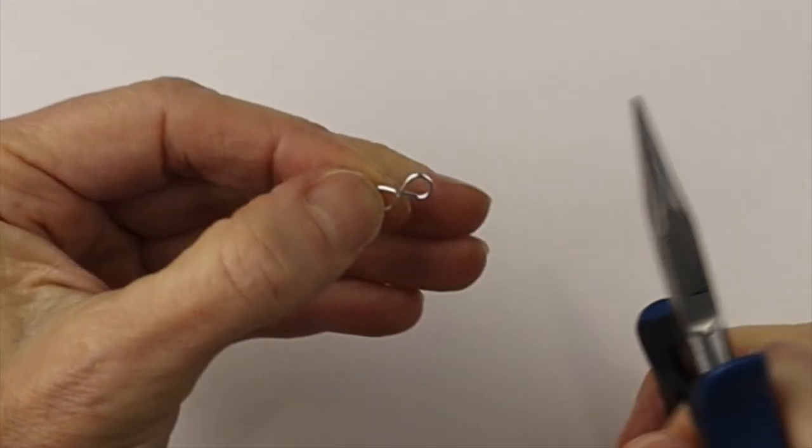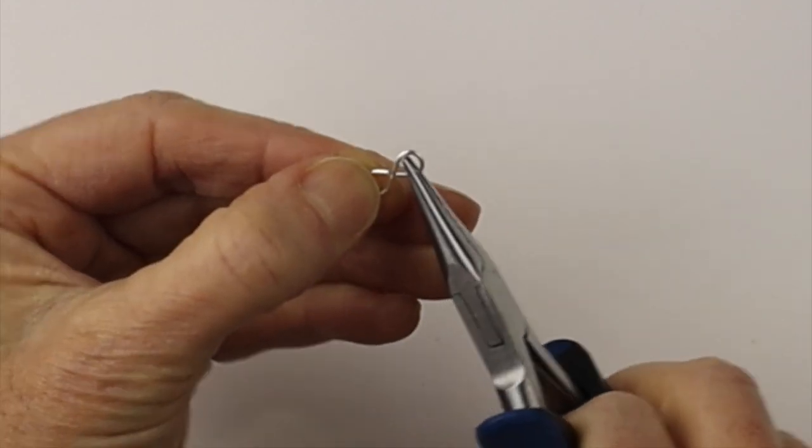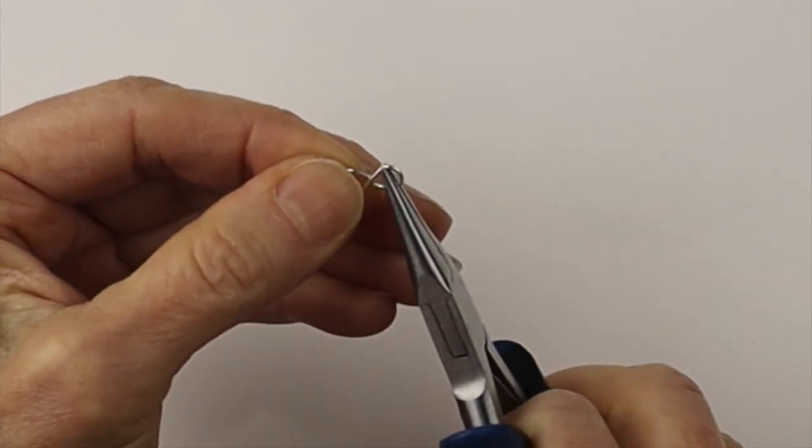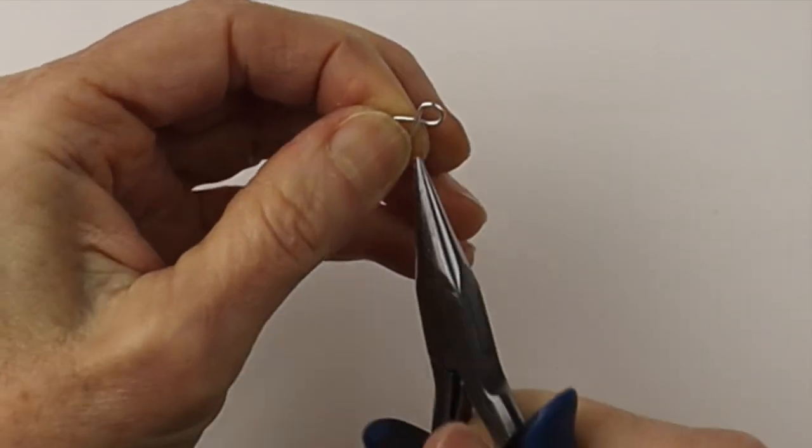Then you use your flat pliers just to push it down so it's flat. We're just going to push the wires together so it's nice and flat. You could pinch them in a little bit if they got a little distorted. So there's your infinity sign.